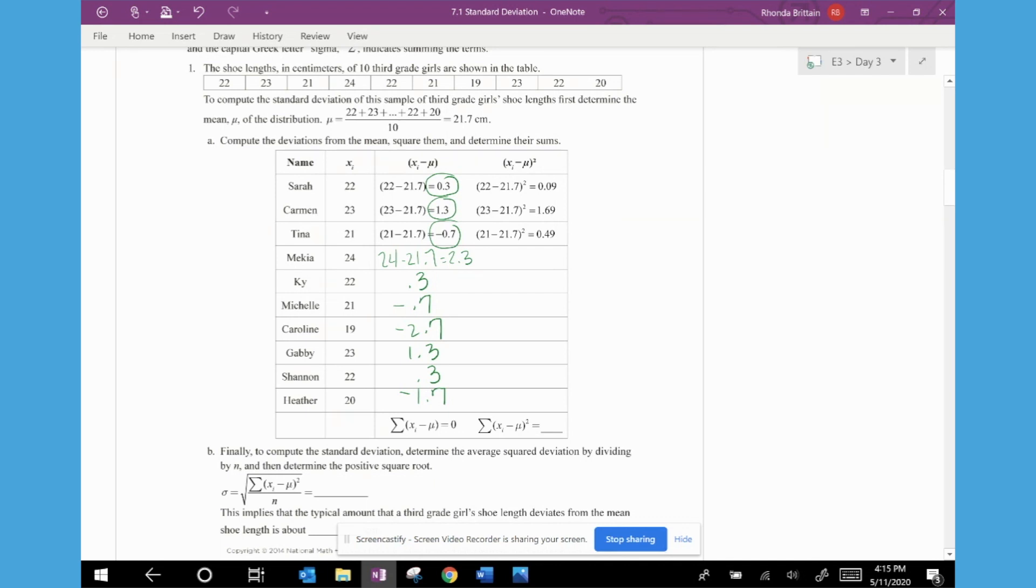So encourage your students to complete the first column. And then even though this is actually already added for you at the bottom, I would have them check that. So it seems really confusing that if we're finding an average that the sum of all of the deviations are 0. And so we have to get around that somehow.